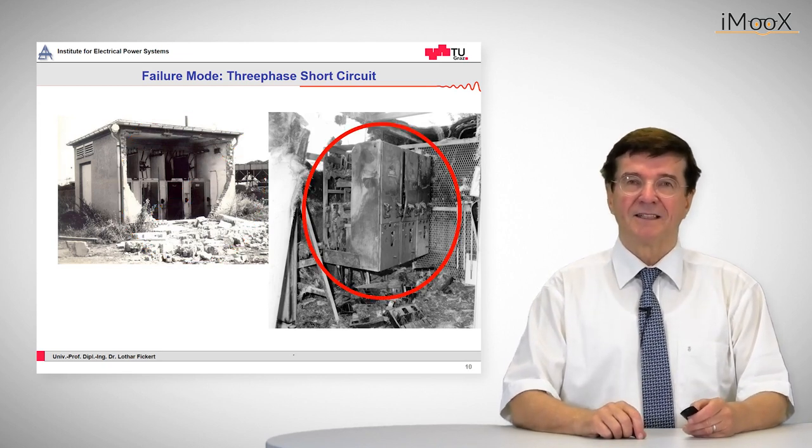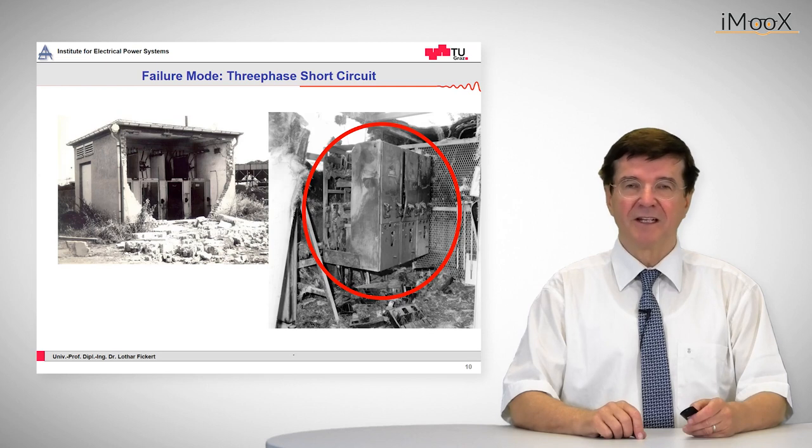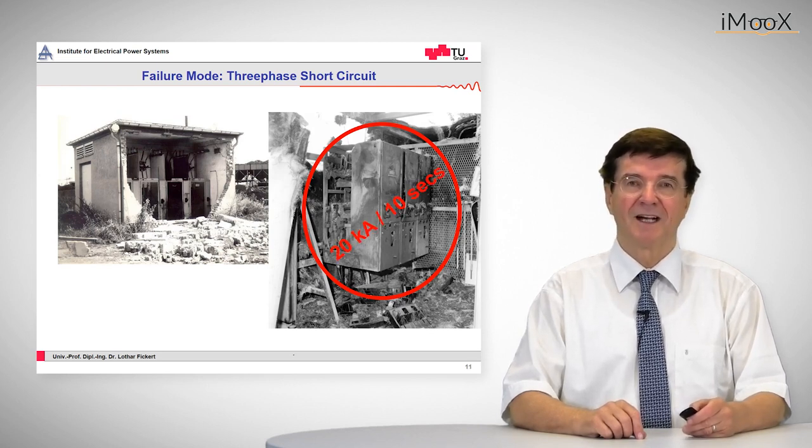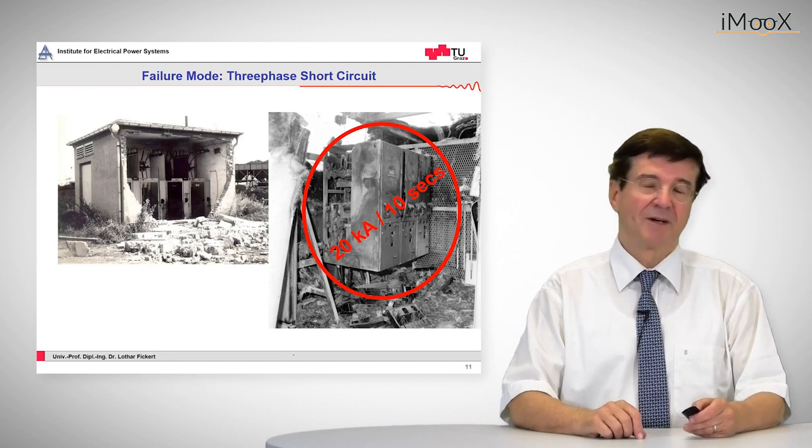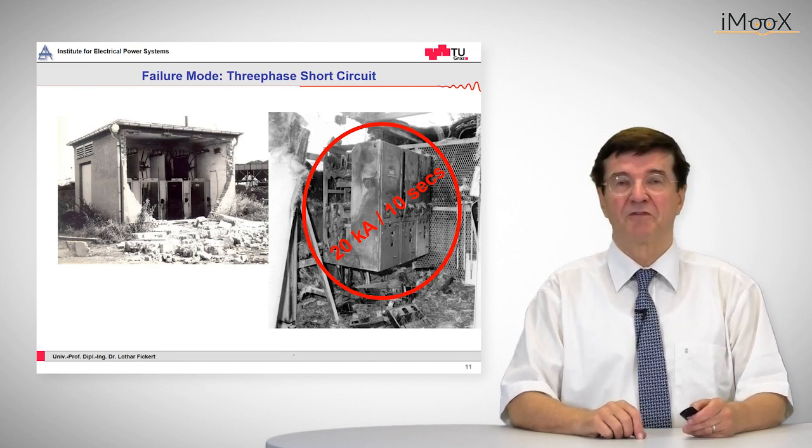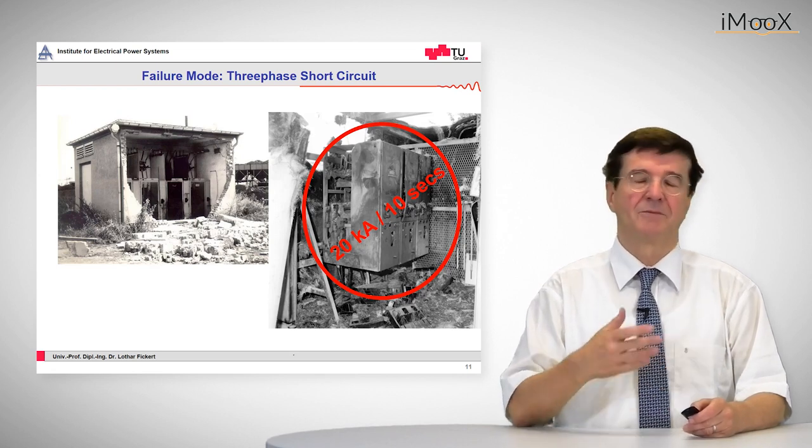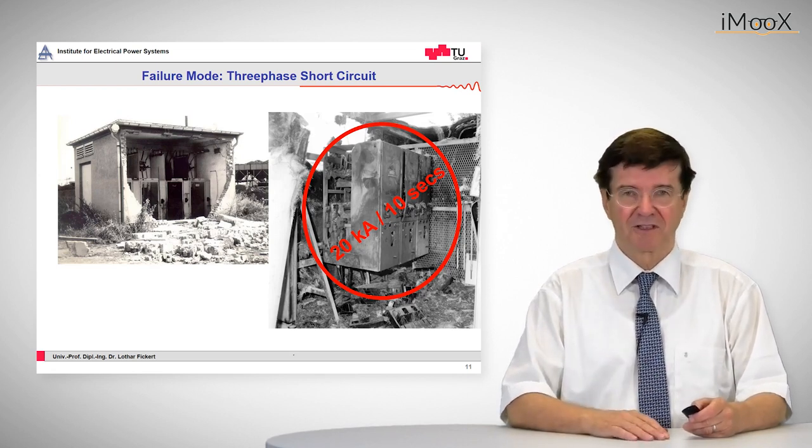Also the switchgear inside this substation is severely damaged. This happens if there's a short circuit of 20 amps for more than 10 seconds. By the way this was a protection failure where neither the protection nor the backup stage tripped so it burned and burned until finally the fault was cleared.